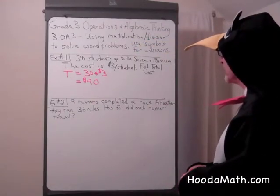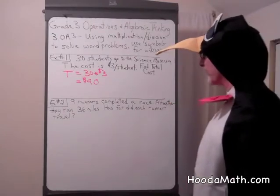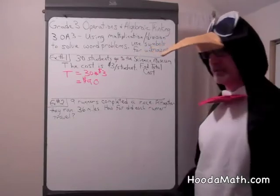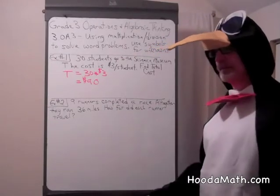Example number 2. Nine runners completed a race. Altogether they ran 36 miles. How far did each runner travel?